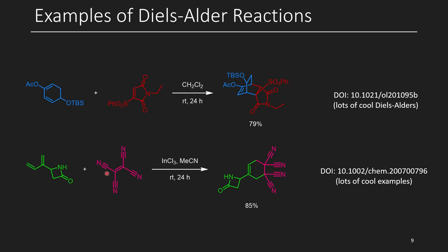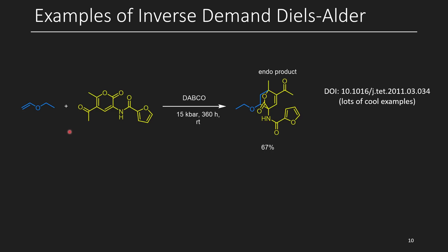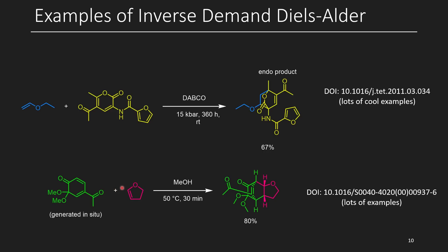Tetracyanoethylene reacts extremely well. Now for inverse demand Diels-Alders, we have an electron-donating group on the dienophile and an electron-withdrawing group on the diene. Here we have a vinyl ether — vinyl ethers are very common electron-rich alkenes used in Diels-Alder reactions — and the electron-withdrawing groups include two carbonyls, although there is a slight electron-donating effect from an NH group. This was done under high pressure, and even though it took over 10 days, they still obtained some product. In the next example, the electron-rich alkene is a dihydrofuran, and the electron-deficient diene is a cyclohexadienone generated in situ. Done in methanol at 50°C for 30 minutes, the product was obtained in high yield.